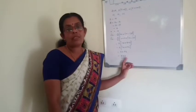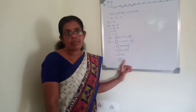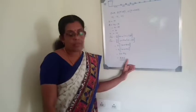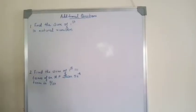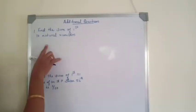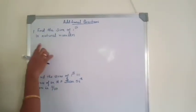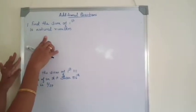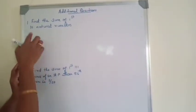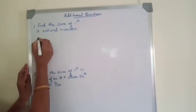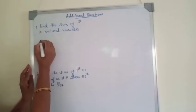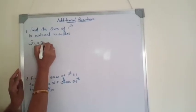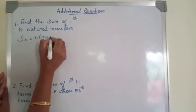This is the last question in the chapter. Now we will see some additional questions from AP. First question: find the sum of first 10 natural numbers. The formula for finding the sum of natural numbers is Sₙ = N(N+1)/2.